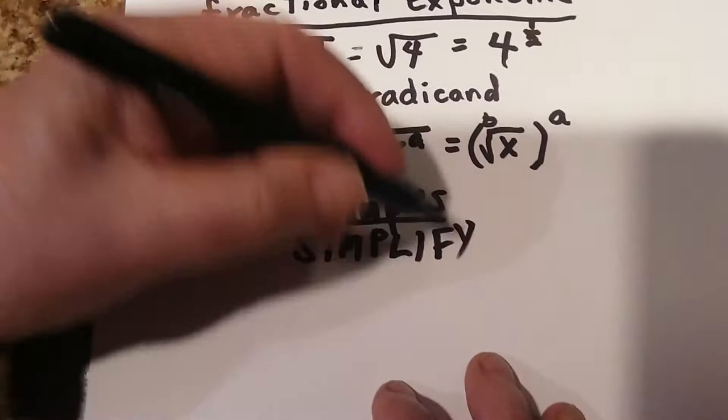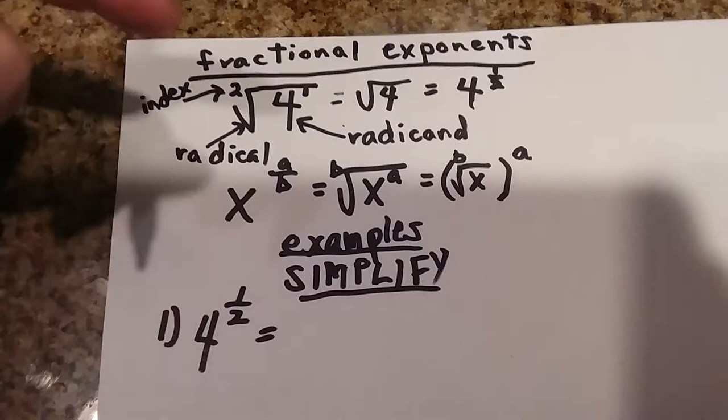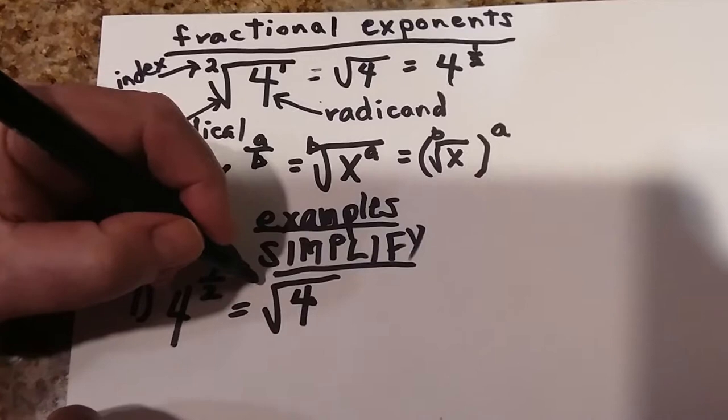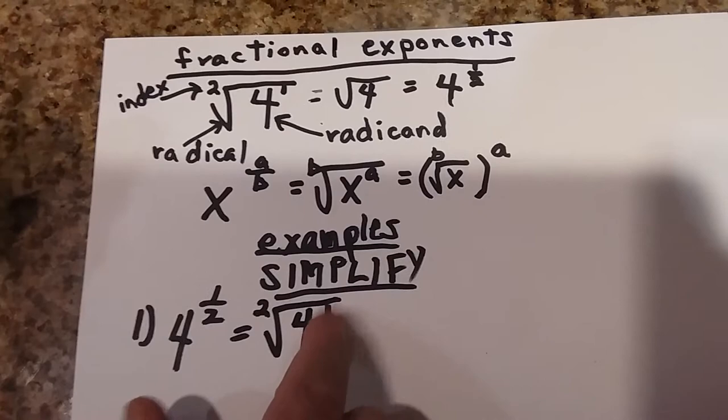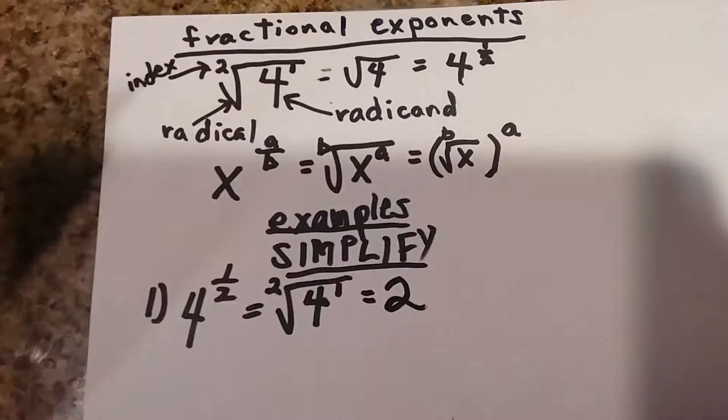Let's start off with some very simple ones. We're going to do 4 to the 1 half. Because it's a fraction, you apply the rule and immediately write a radical. The base goes inside, the bottom number goes outside as the index, and the top number goes here as the exponent. The 1 is understood and the 2 is understood, so it's just the square root of 4, which is 2 times 2 — the answer is 2.